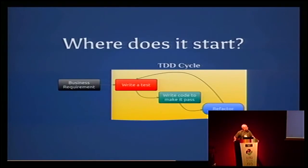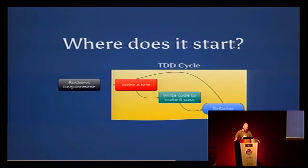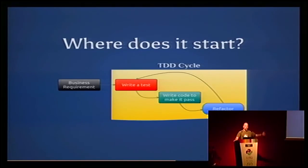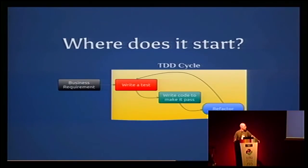But where do we start? It all starts with the business requirement — that's very important. You have to understand the business requirement. When you are clear on it, you enter the TDD cycle: you start writing a test, you make it pass, you refactor. Test, pass, refactor — and so on and so forth, until that business requirement is fulfilled.